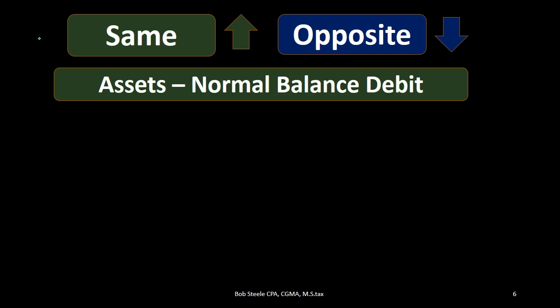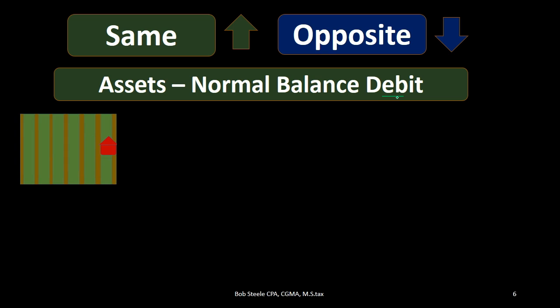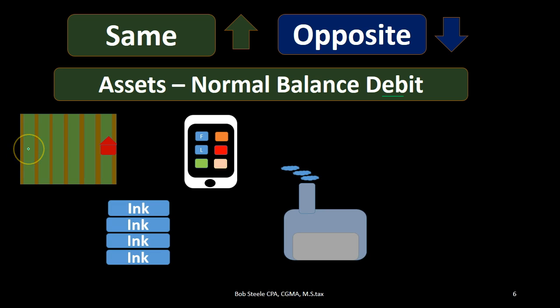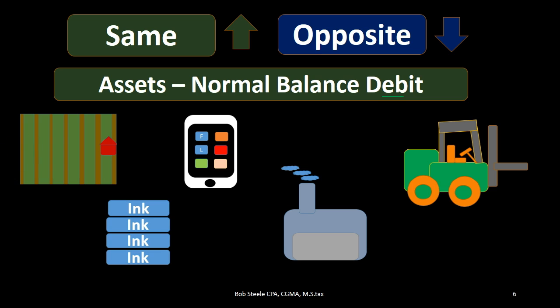We can apply the same rule to all other assets, since all assets have a normal debit balance. For example, land is an asset. Office supplies is an asset. The phone or computer itself — not the phone bill expense, but the physical item — could be an asset. A building, a factory, and equipment all work the same way when making these accounts go up or down, because they all have a normal debit balance.